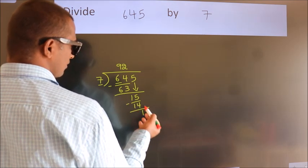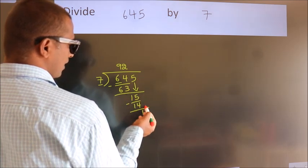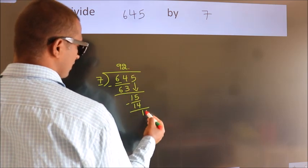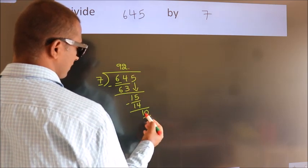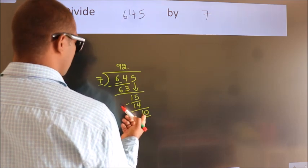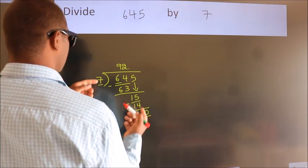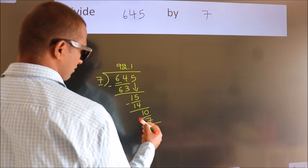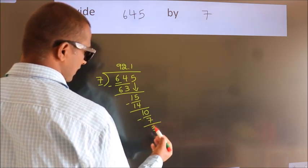After this, there are no more numbers to bring down, so what we do is put a dot and take 0, making 10. A number close to 10 in the 7 table is 7 ones, which is 7. Now we subtract and get 3.